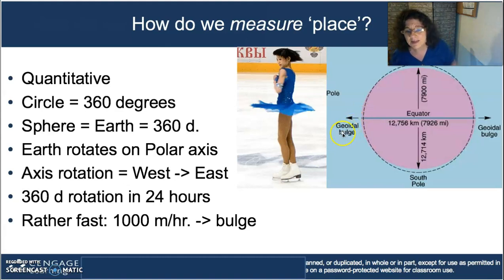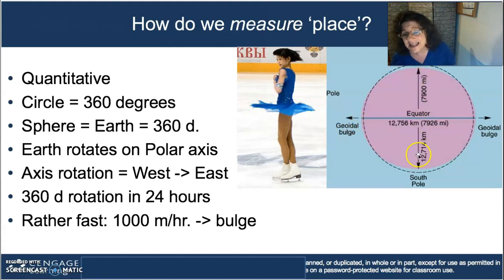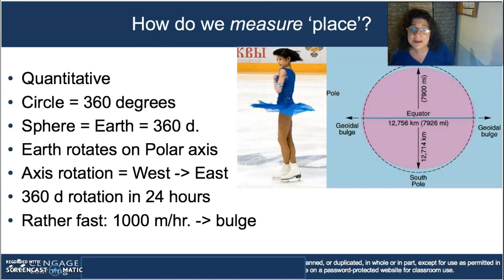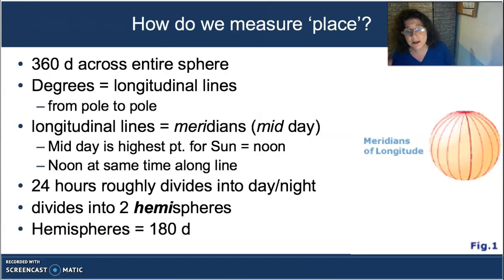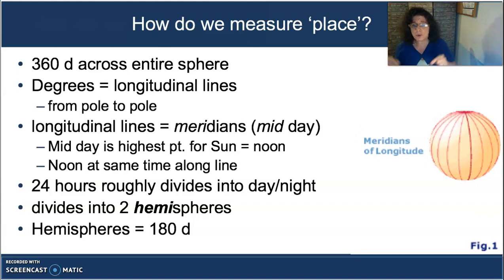You can see the bulge here — it's called a geodal bulge, and the distance from north pole to south pole is slightly less than the equatorial diameter. We can use these degrees to tell locations very precisely. Those degrees form lines that move from north pole to south pole — longitudinal lines.